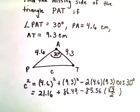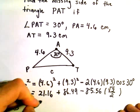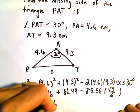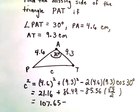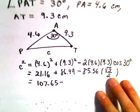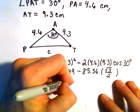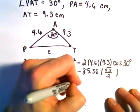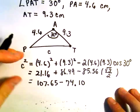Now just a little bit more simplification. So 21.16 plus 86.49, that's going to be 107.65. And then let's see, we can take the square root of 3, I'm approximating this a little bit, multiply that by 85.56, then divide all of that by 2.